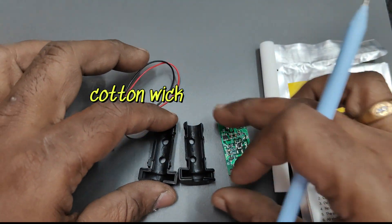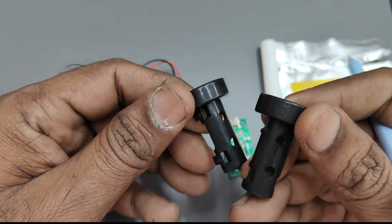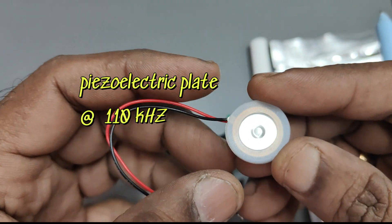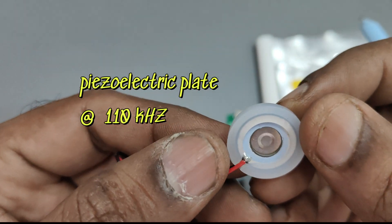It is supplied with a board and a cotton wick and a holder to hold the cotton wick which absorbs water and a piezoelectric plate which is made to oscillate at 110 kilohertz.